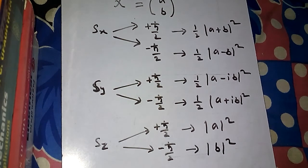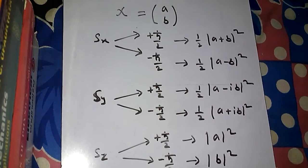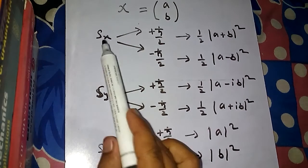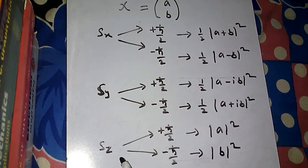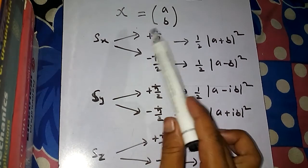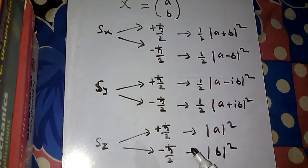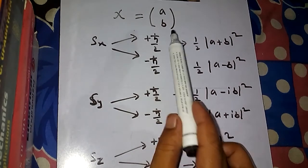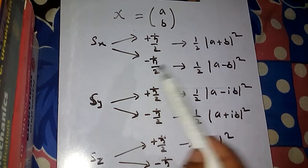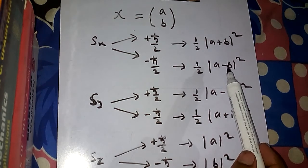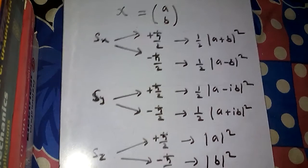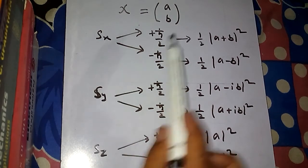One important thing to notice: irrespective of whether you measure S_x, S_y, or S_z, the results that are possible are only plus ℏ/2 or minus ℏ/2. However, it depends on what you are measuring — the probabilities of finding plus ℏ/2 or minus ℏ/2 are different for S_x, S_y, and S_z. This is something you should remember, as questions will follow on this topic.